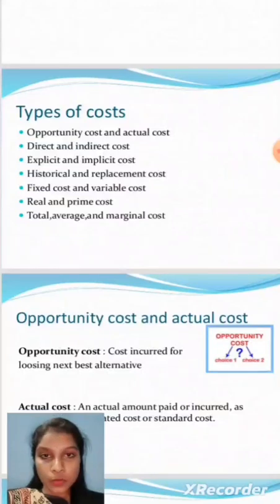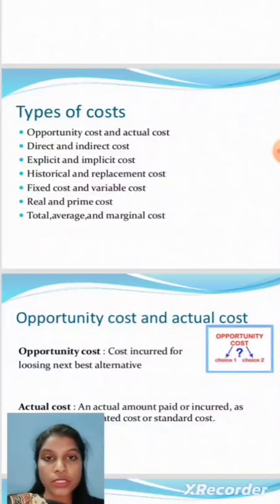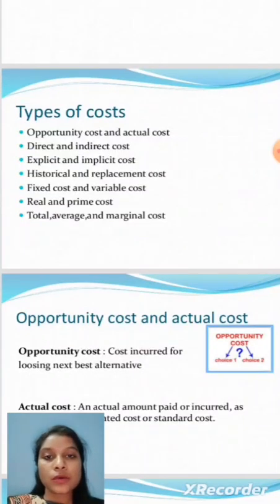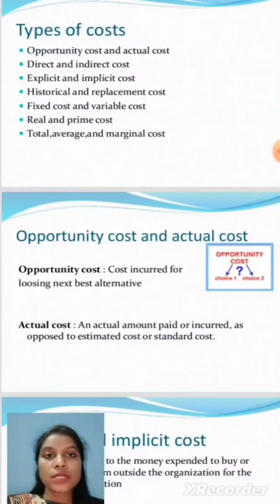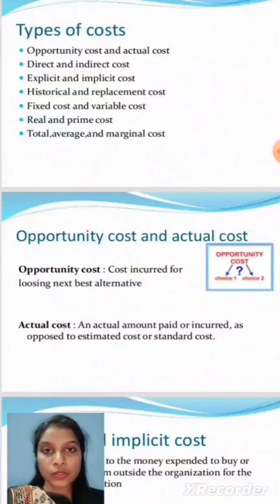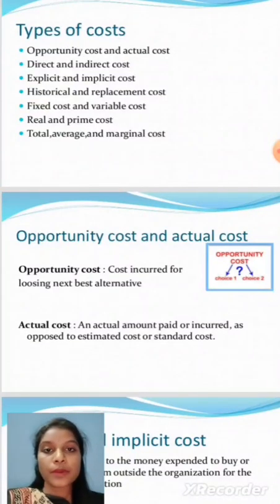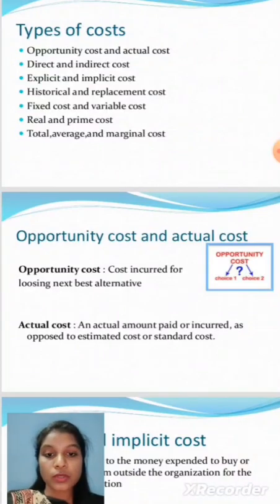Now let us move on to the types of cost. There are seven types of cost in business activities: opportunity cost and actual cost, direct and indirect cost, explicit and implicit cost, historical and replacement cost, fixed cost and variable cost, real and prime cost, and total, average, and marginal cost.